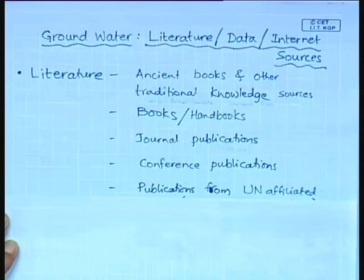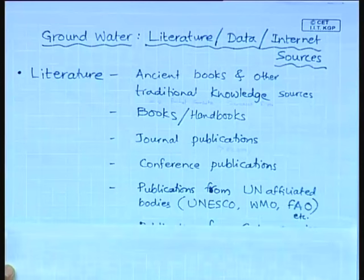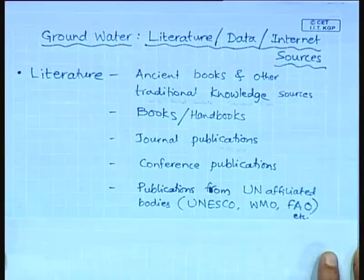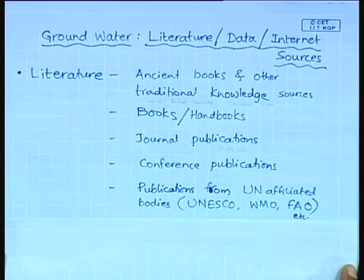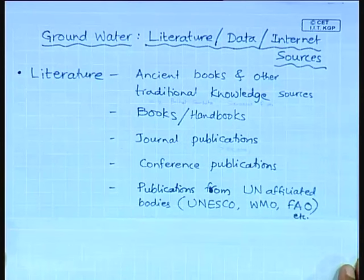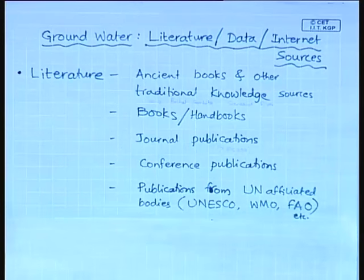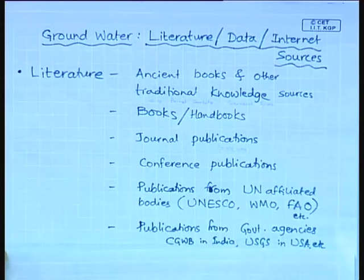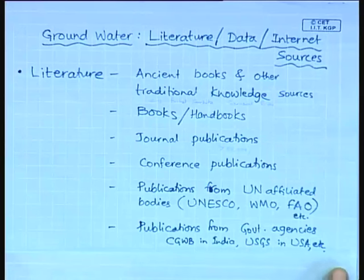Next are publications from United Nations affiliated bodies. There is what is called UN Water, which consists of 28 United Nations bodies. Of these, three important ones are: UNESCO — the United Nations Educational, Scientific and Cultural Organization, headquartered in Paris, France; the World Meteorological Organization (WMO); and the Food and Agricultural Organization, headquartered in Rome, Italy. These three main UN organizations constitute part of what is collectively known as UN Water.